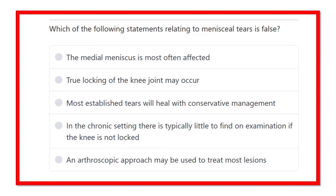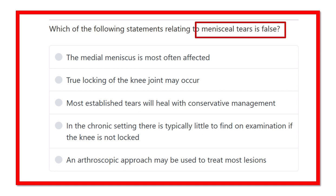Which of the following statements relating to the menisci tear is false? We know there are two important menisci: one is the medial menisci and another one is the lateral menisci. So two important menisci are present in the knee joint. Which of the following is not true regarding the menisci?